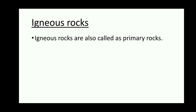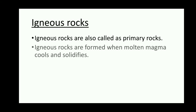The first one is igneous rocks. Igneous rocks are also called primary rocks. Igneous rocks are formed when molten magma cools and solidifies. When there is excess heat and pressure, volcanoes are formed and lava comes out from the volcano.